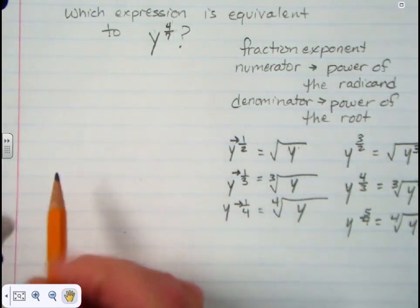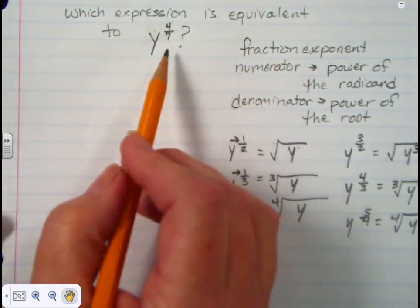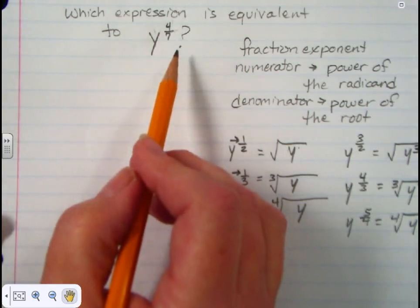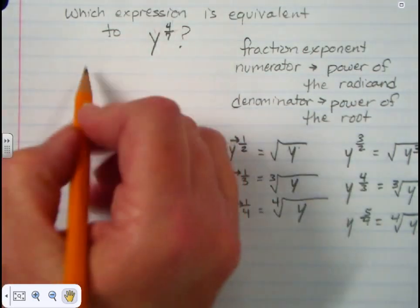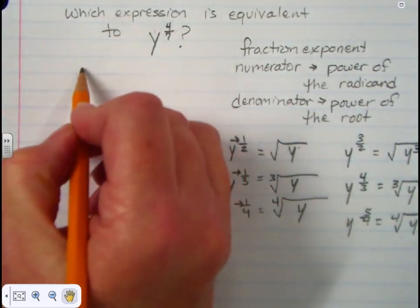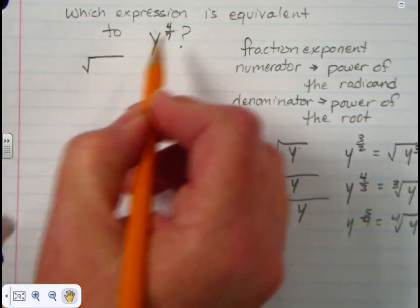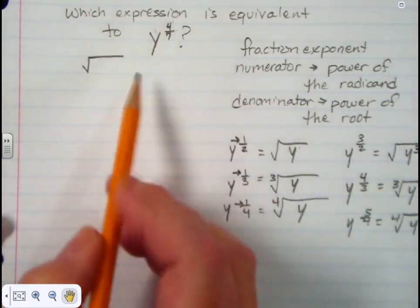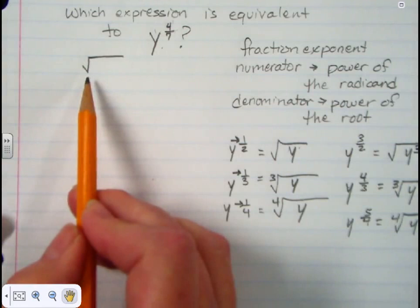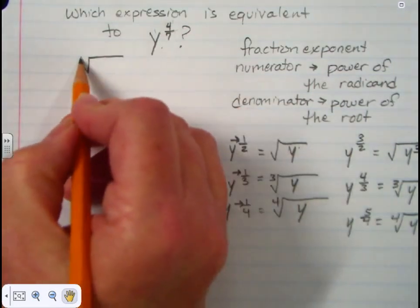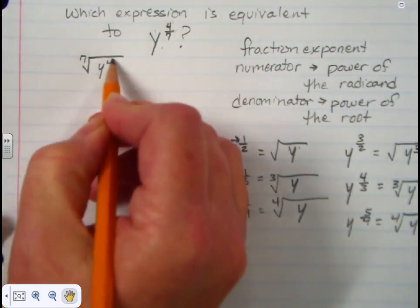So in our example — which expression is equivalent to y to the four-sevenths — you should be able to transform it from exponential form to radical form, and that would be the seventh root of y to the fourth.